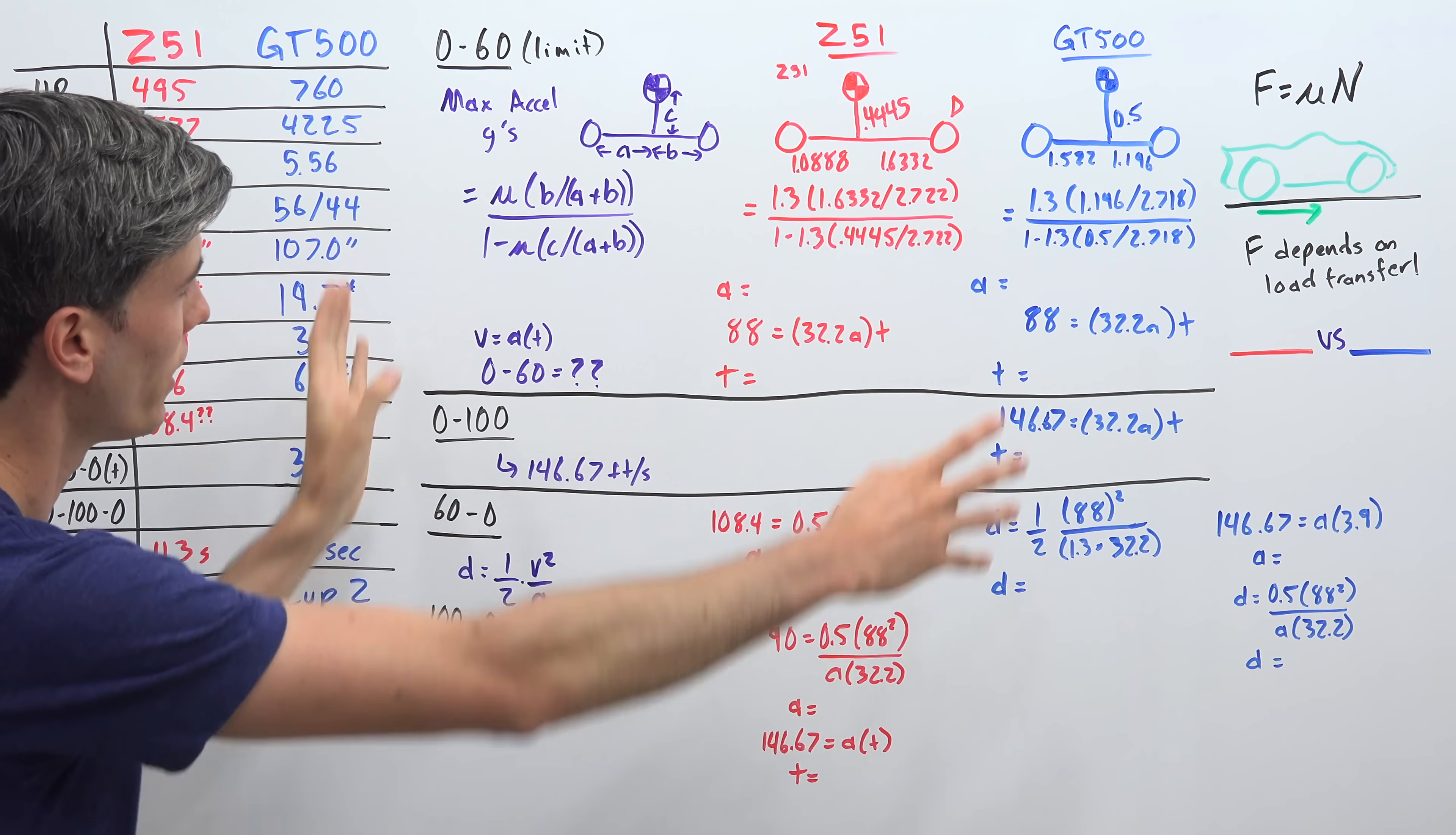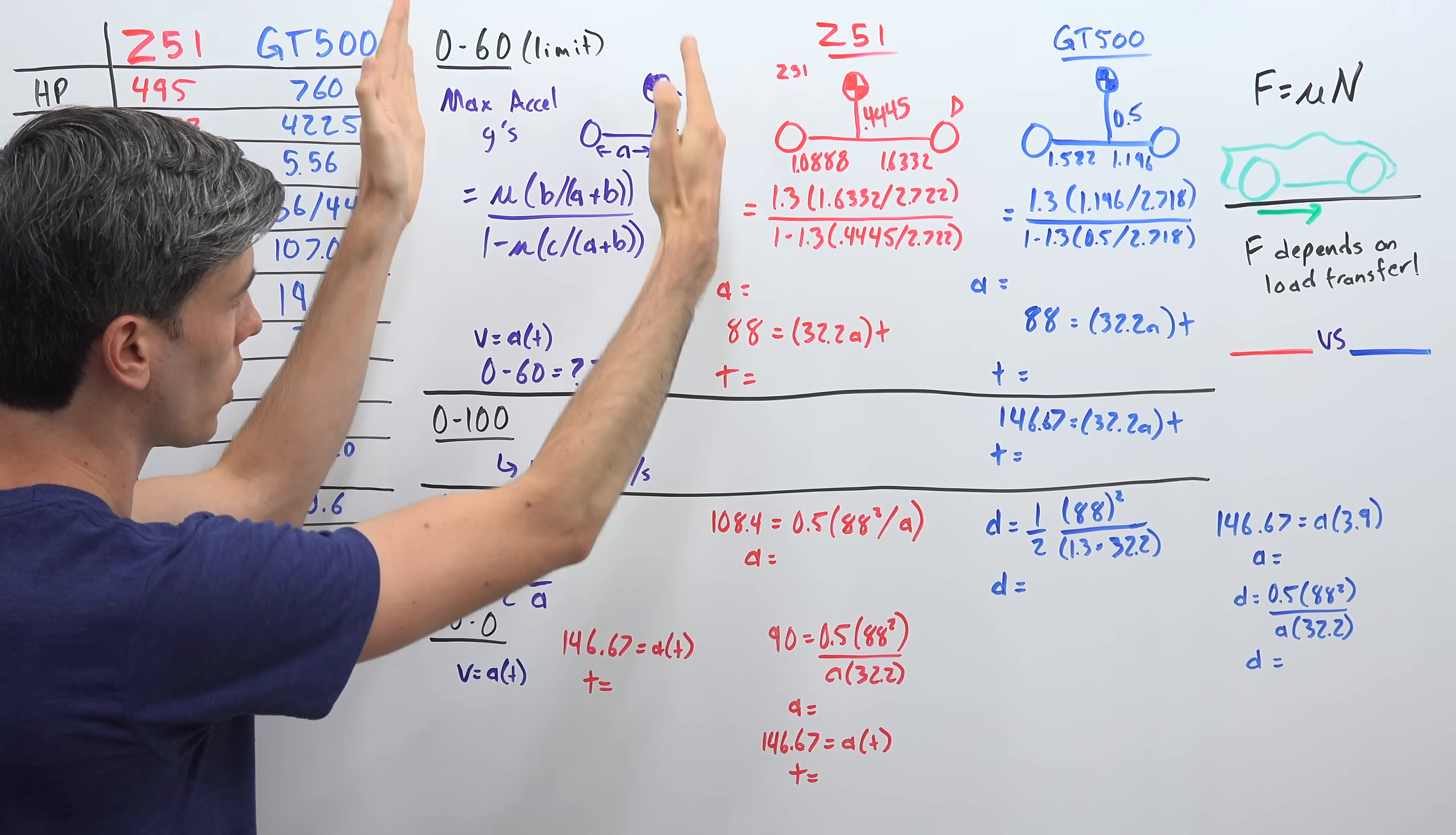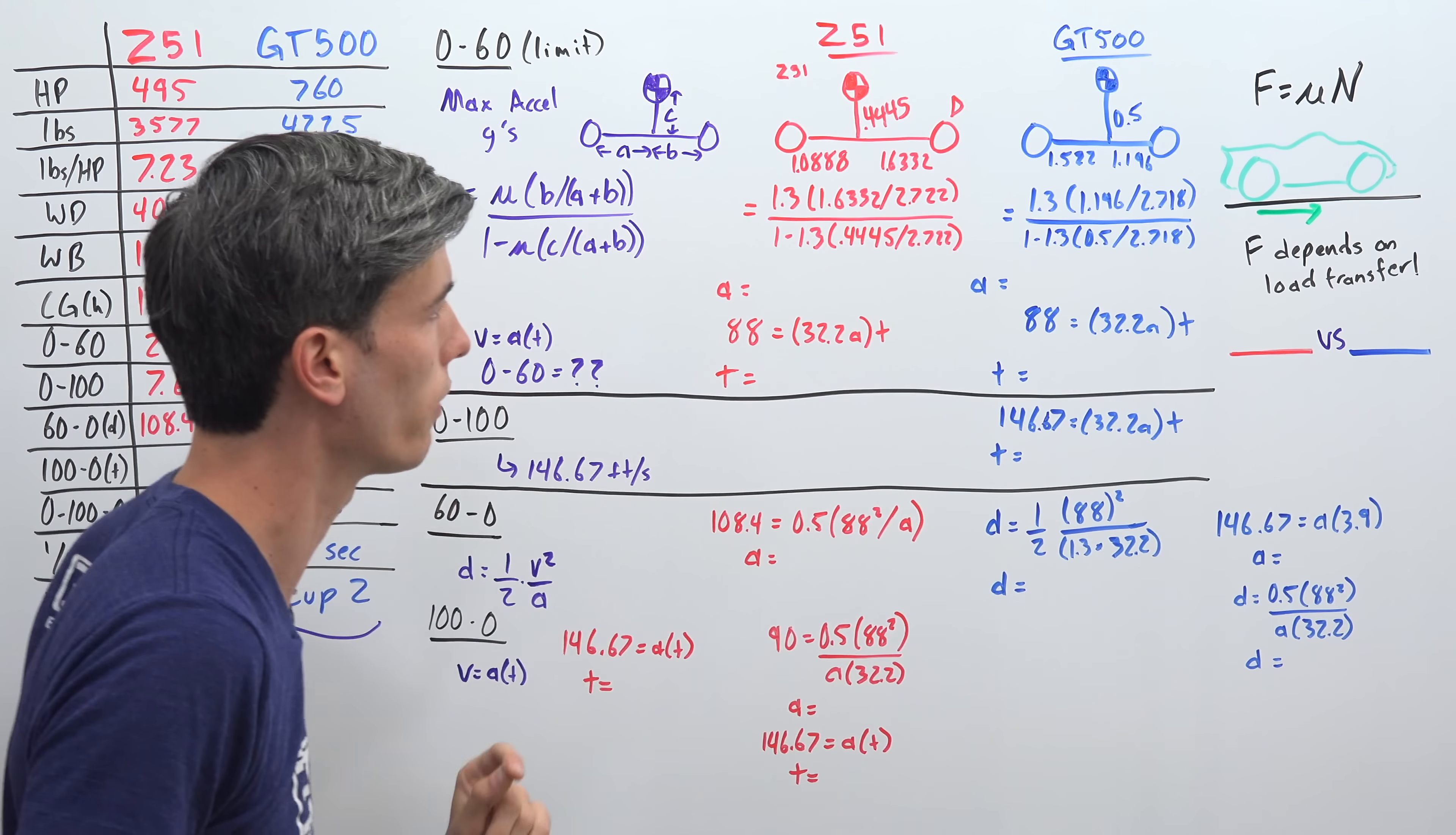Alright, so knowing these times, one way we can try to understand why are they different is by trying to figure out what is the theoretical limit that each of these could accelerate to if they had infinite power. So just purely based on traction, how fast could either of these vehicles accelerate to 60 miles per hour? And so what we have right here may look like a mess, but I promise you it's very simple. In this section right here, we have what are we looking for? In this case 0 to 60 limit and everything in purple is our equations that we're going to use. Then here in red, we have all the math for the Corvette Z51. And then here in blue, we have all the math for the Ford GT500.